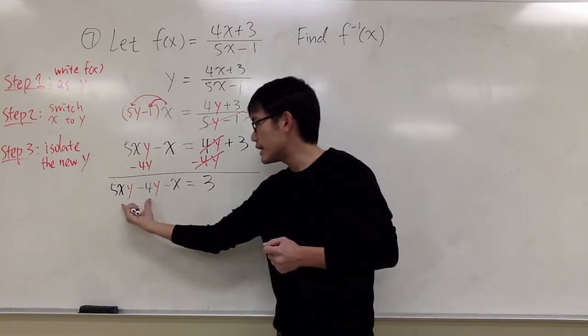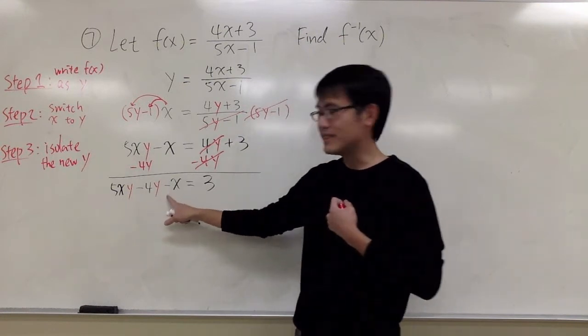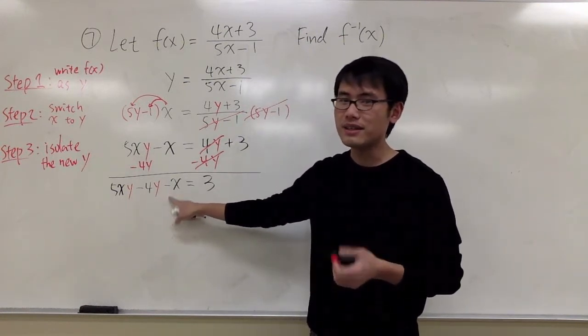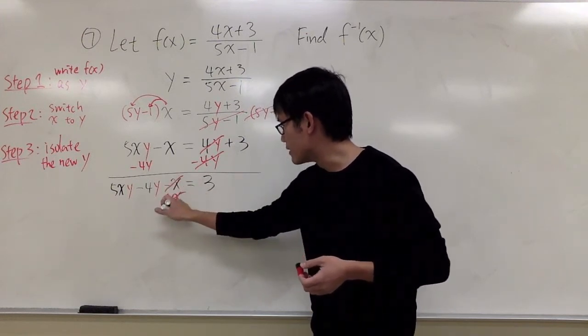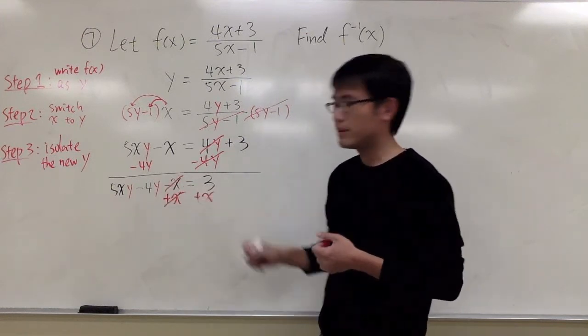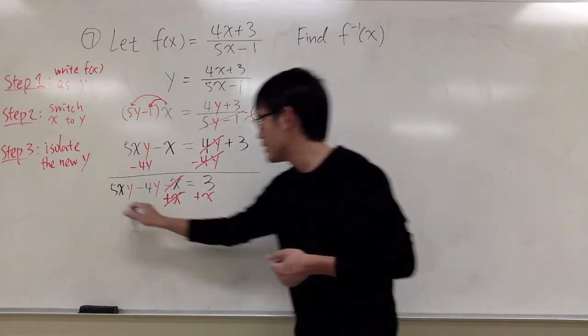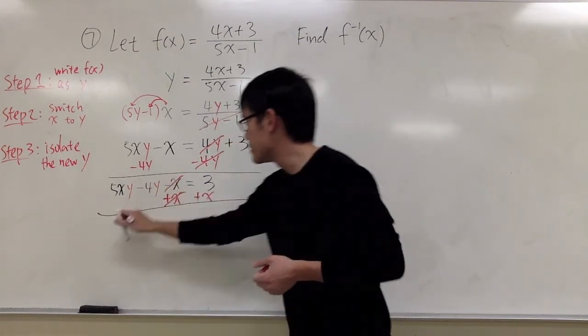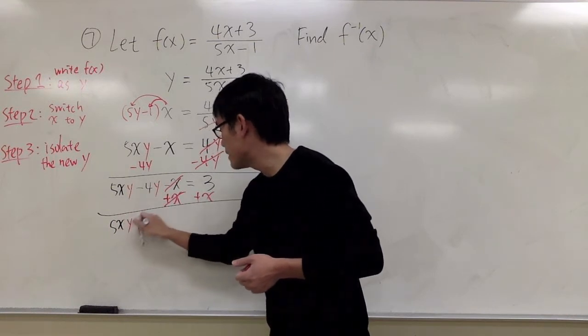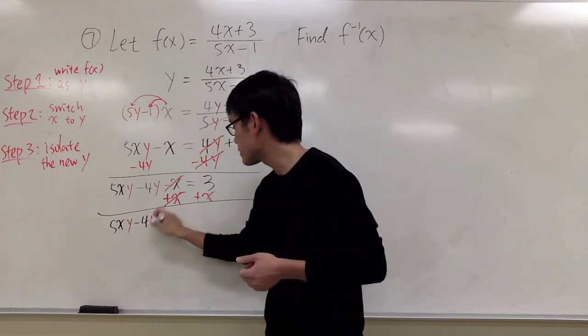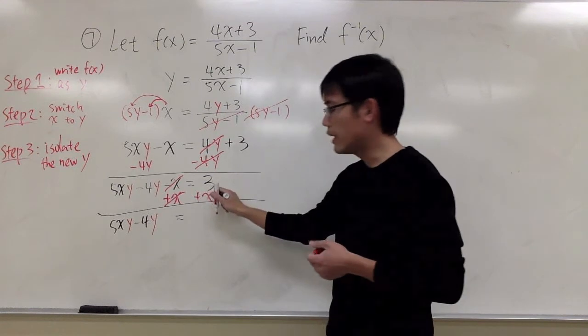I want all the y's on one side. I don't want this x, I don't want this negative x right here. So let me add x here, so that these two will cancel, and plus x on the other side as well. So with that, we will end up with 5xy minus 4y, that will equal to x plus 3.